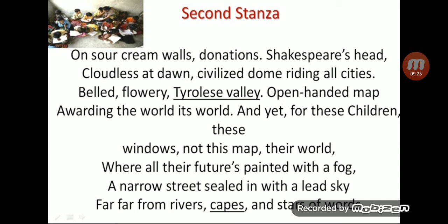The next line: 'bellied, flowery, tire-loss valley.' Here, 'flowery' and 'valley' have the same ending sounds — so this is internal rhyme, used to create a rhyming effect for poetic impact.